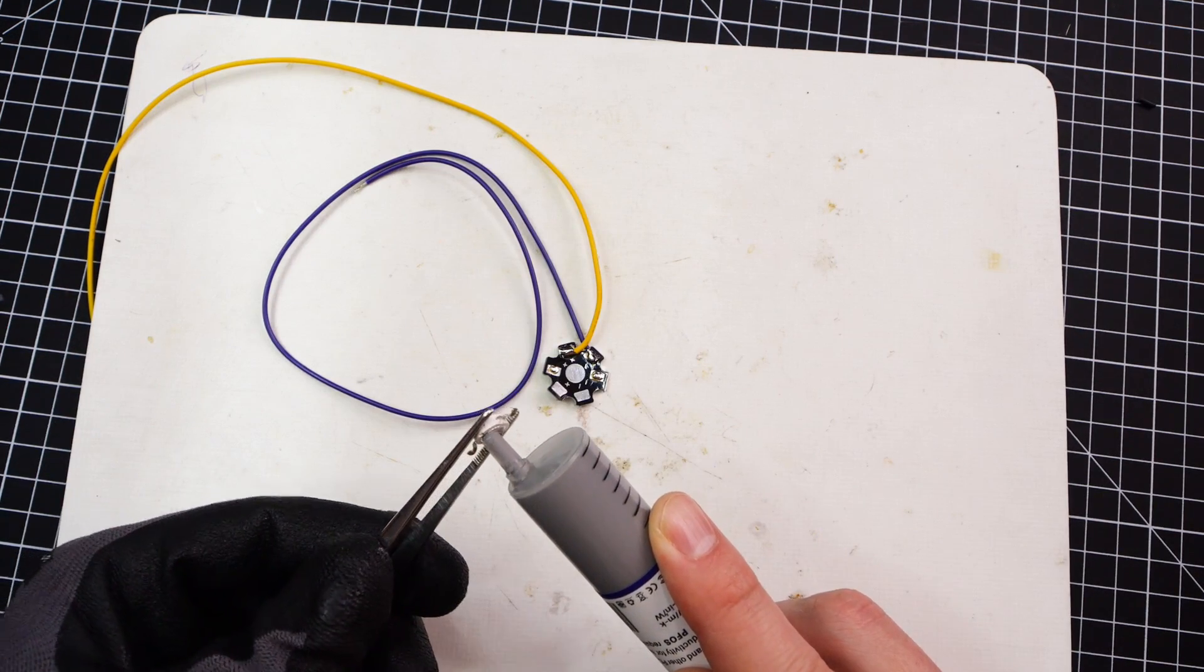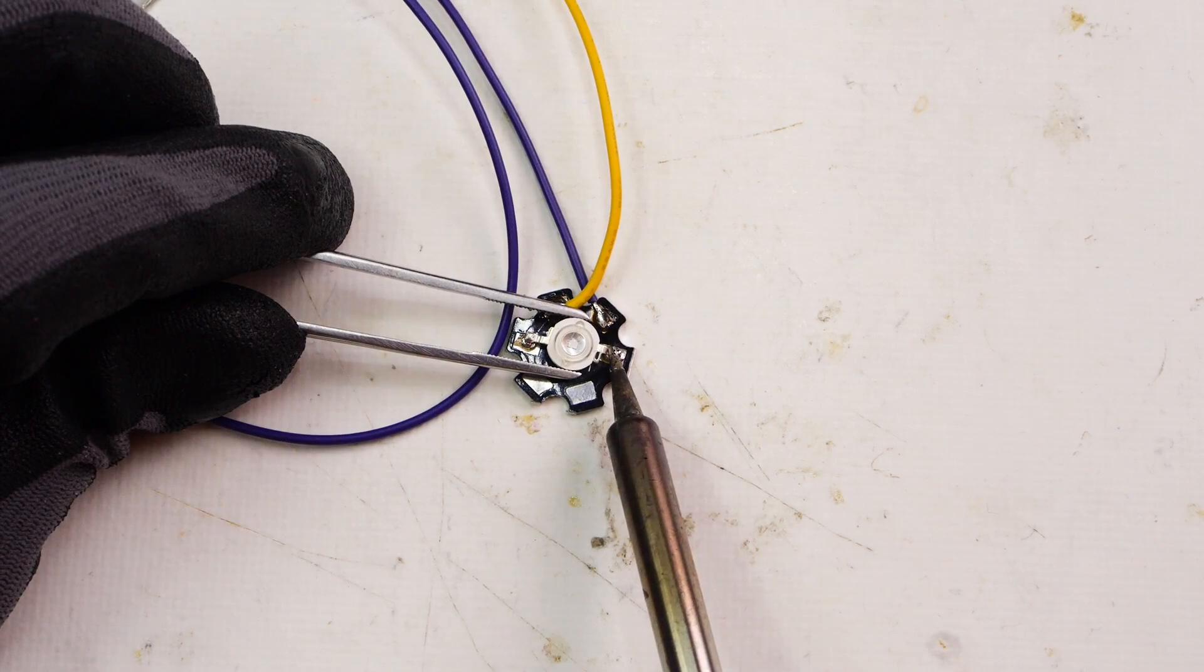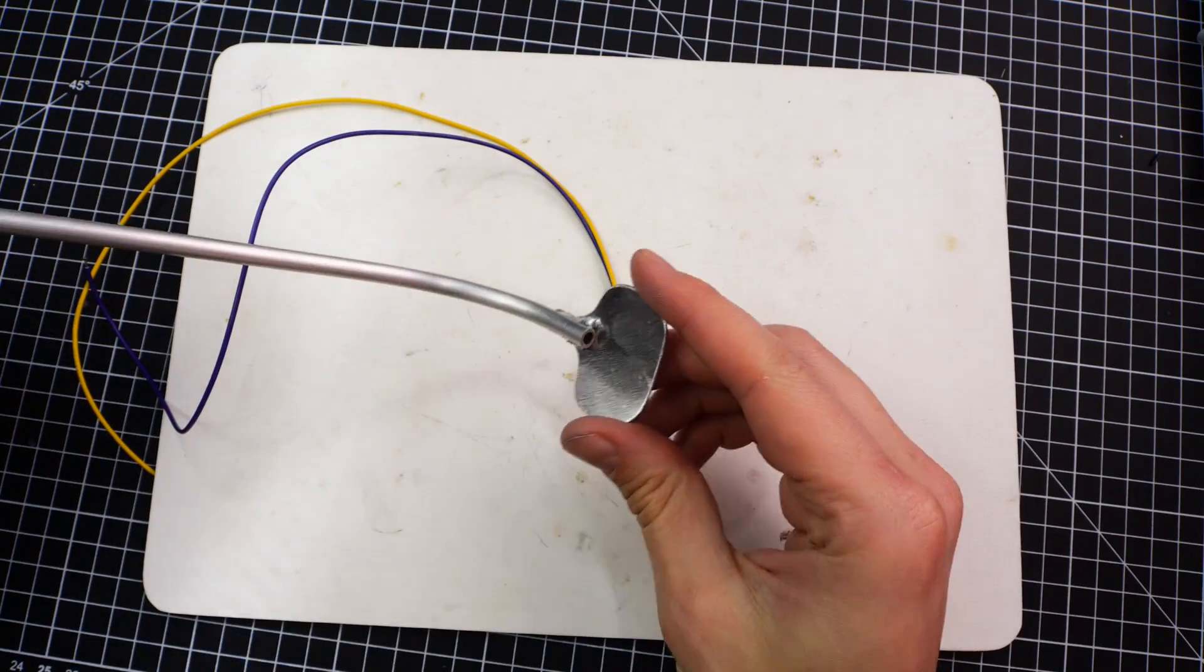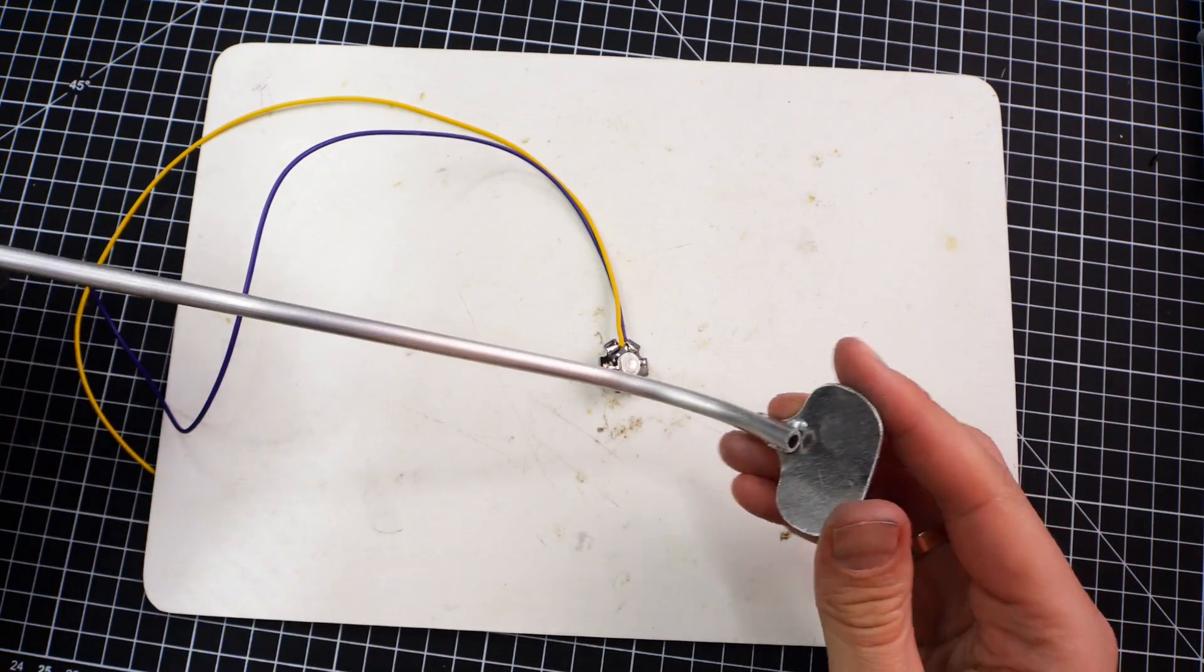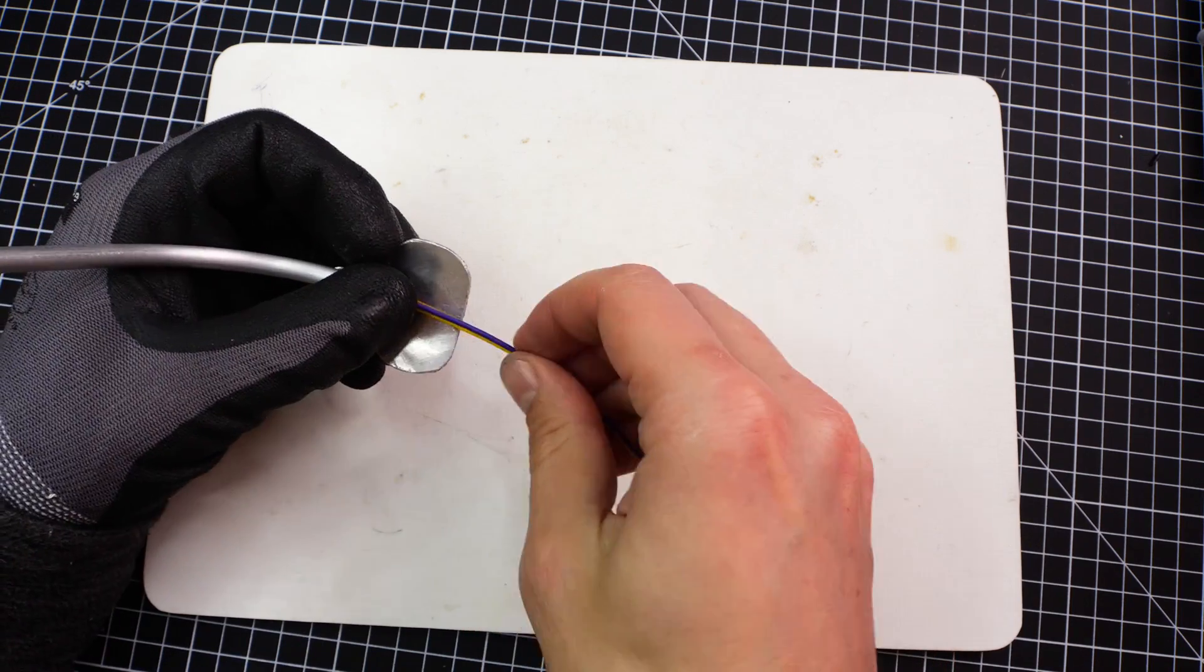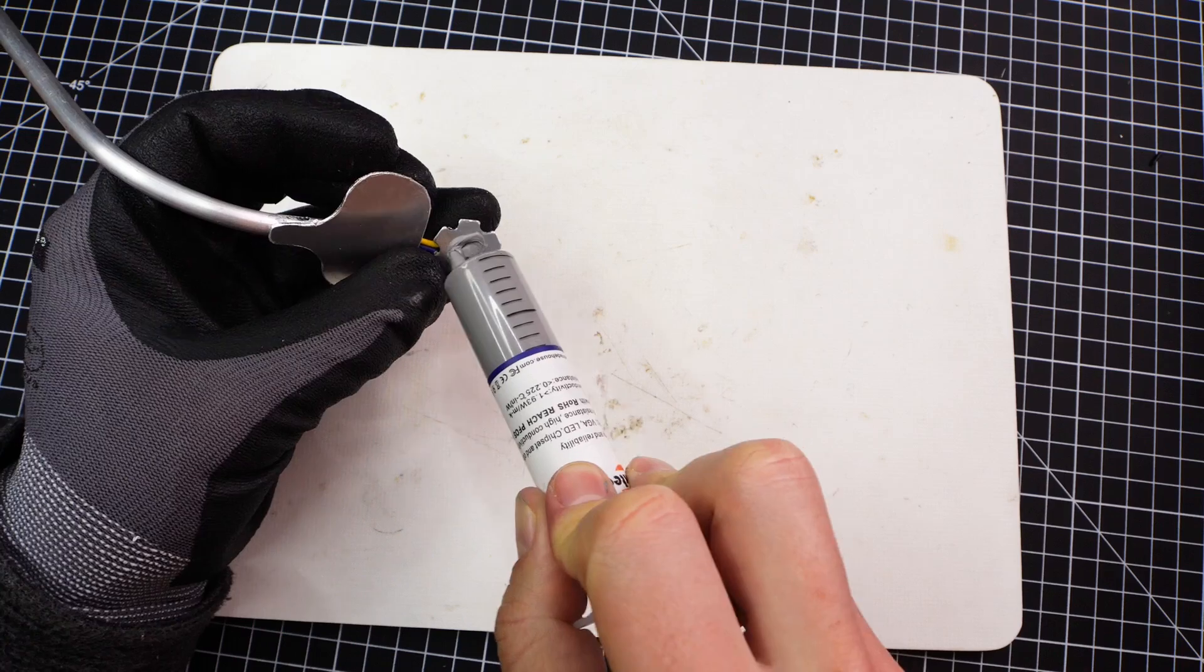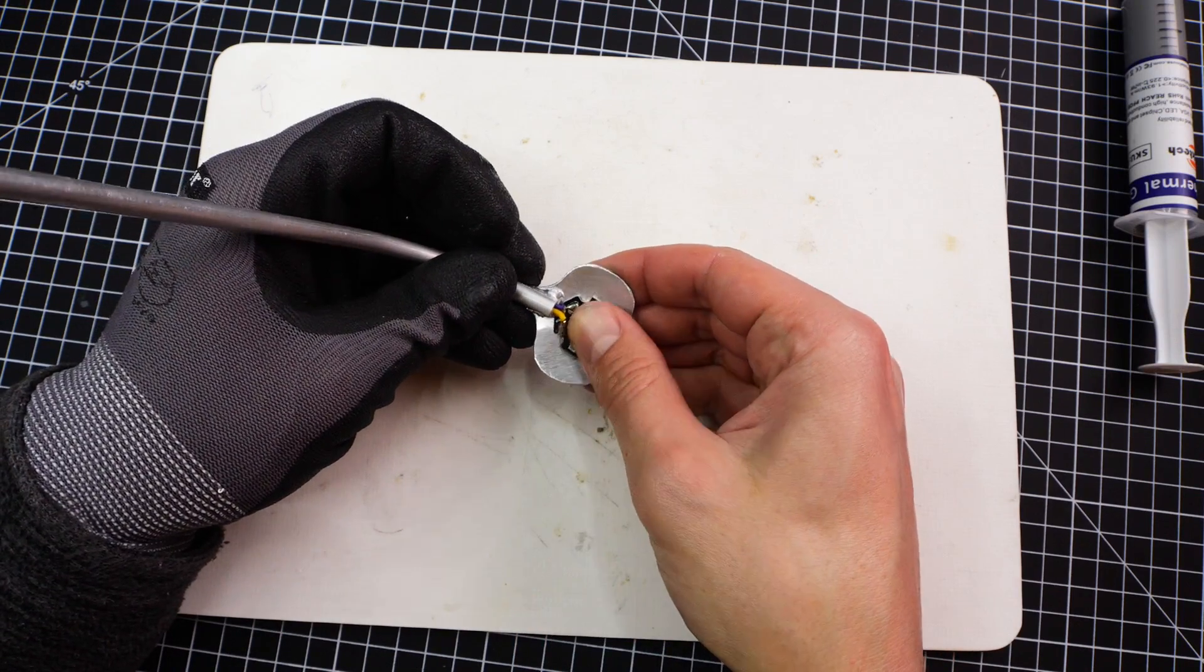I am adding some thermal paste on the LED before soldering it on. I am also adding solder paste on the heatsink itself. The holder being metal will further help spreading the heat.